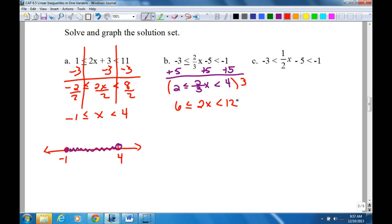Now what? Divide everything by 2. 3 less than or equal to x less than 6. All right. So if I graph that, I've got a 3 and a 6. Open circle or closed circle? Closed. How about this one? Open. And fill it in.